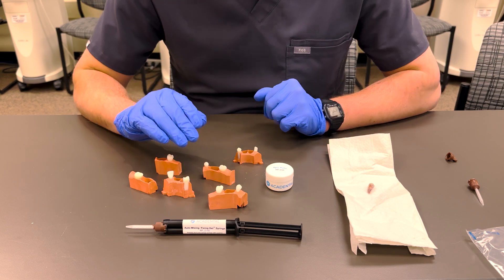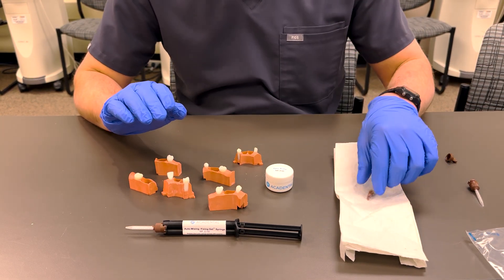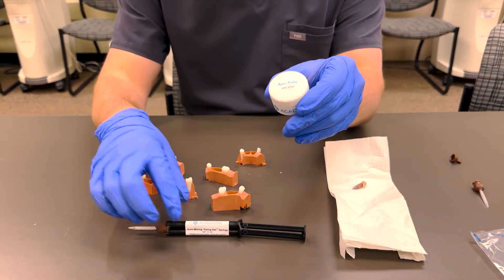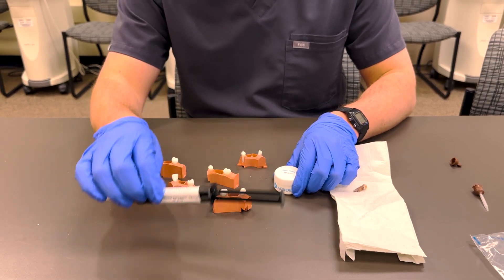In order to mount your teeth, you're going to need a few things: your actual physical extracted teeth, your sextants, apex putty, and fixing gel.